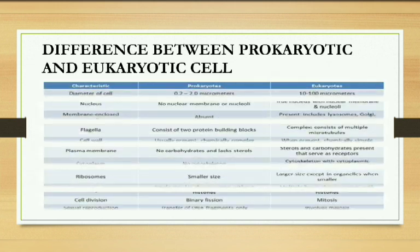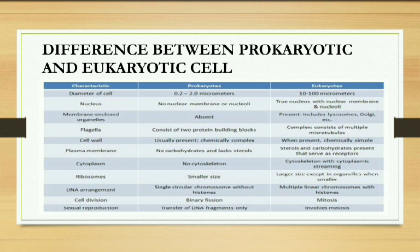Difference between prokaryotic and eukaryotic cell: Prokaryotic cells are basically very small; eukaryotic cells are big. In prokaryotic, membrane-enclosed organelles are absent; in eukaryotic, they are present. Flagella is present in prokaryotic cells, but a more complex one is present in eukaryotic cells. Cell wall in prokaryotic is called capsule, while it is a simpler structure in others. Cytoskeleton is absent in prokaryotic cytoplasm; present in eukaryotic. Ribosome is smaller in prokaryotic, larger in eukaryotic. Cell division in prokaryotic occurs by simple asexual reproduction; in eukaryotic, both mitosis and meiosis take place, including sexual reproduction.